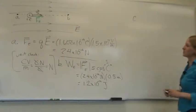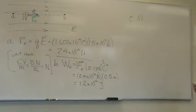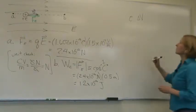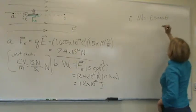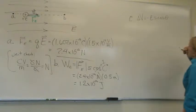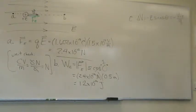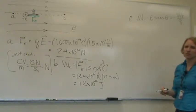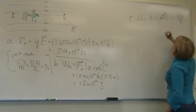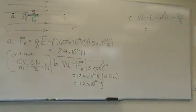Part C was to find the potential difference between points A and B. We could use W·E over Q. Either one is going to work — this has two numbers multiplied, this is two numbers divided, so those equations are equally simple. The book tells us that if we do that, we get 7.5 times 10 to the minus six volts.